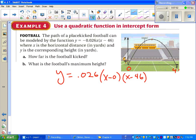Part A says, how far is the football kicked? Well, the football's kicked however far it goes before it hits the ground. It hits the ground at two places. It's on the ground at 0 and 46. Obviously, we didn't kick it 0 yards, so we must have kicked it 46 yards. Don't forget your units.